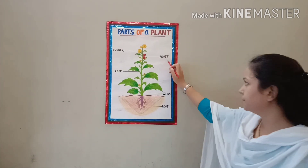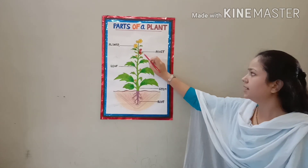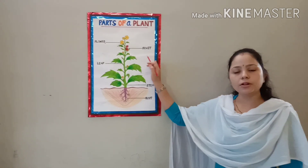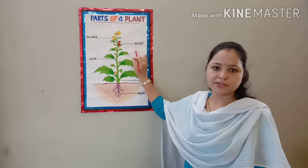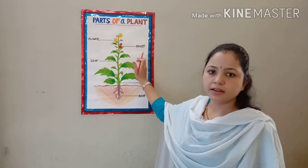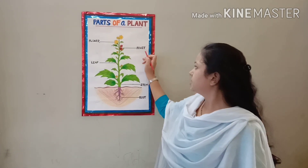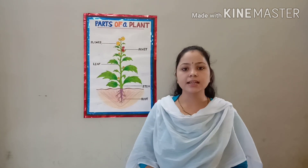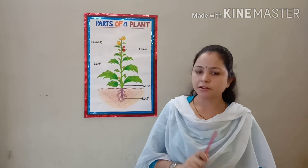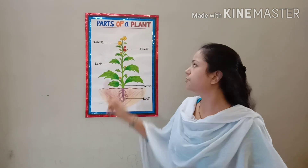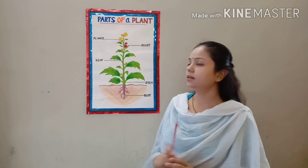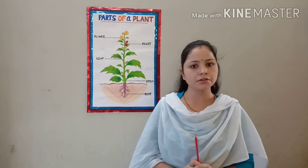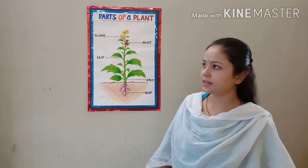Come to the fruit. Fruit is called the delicious part of the plant. Fruit protects the developing seed of the plant.